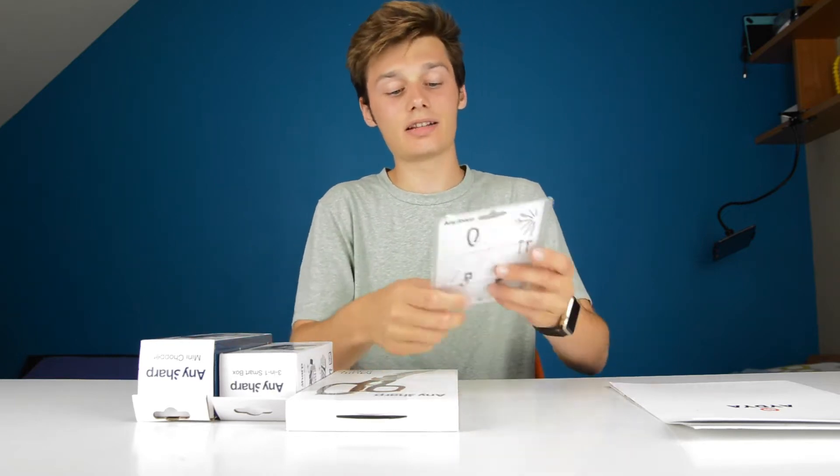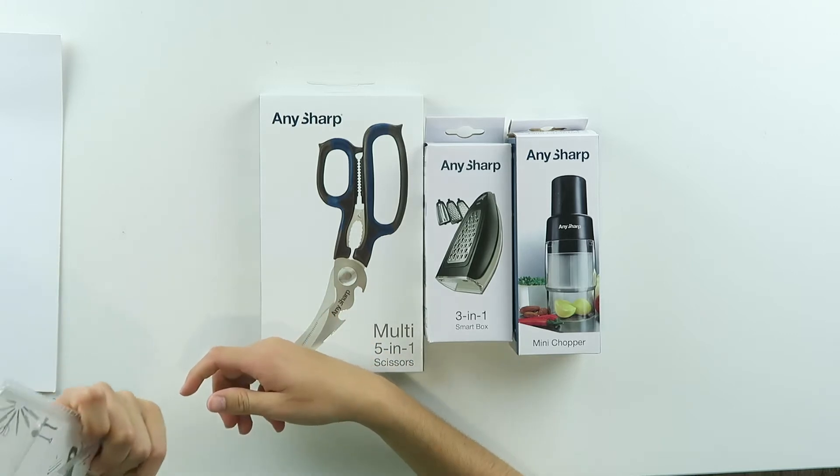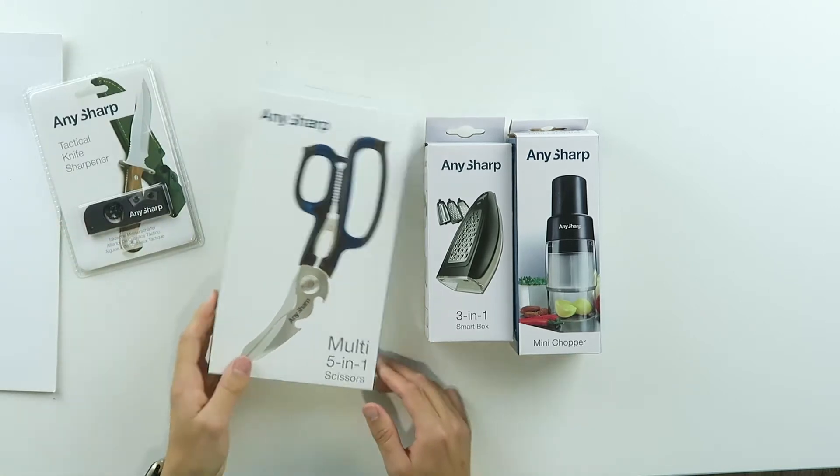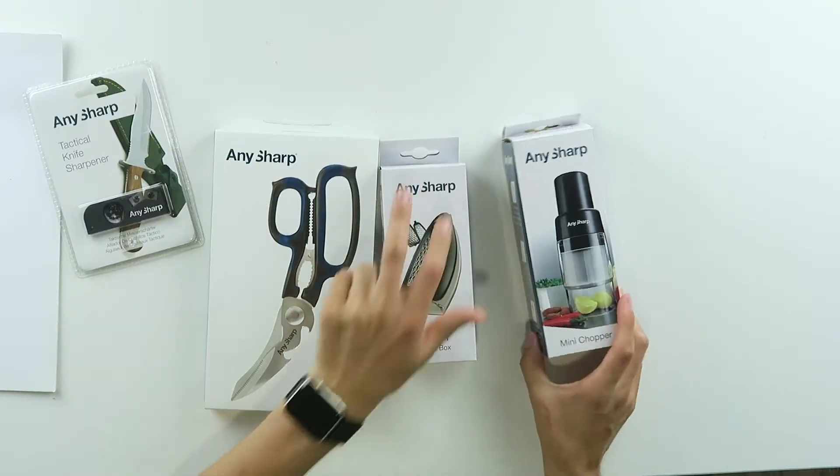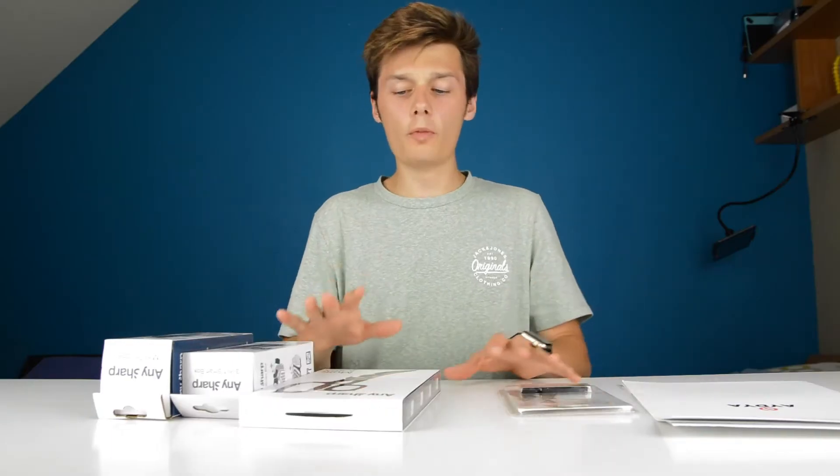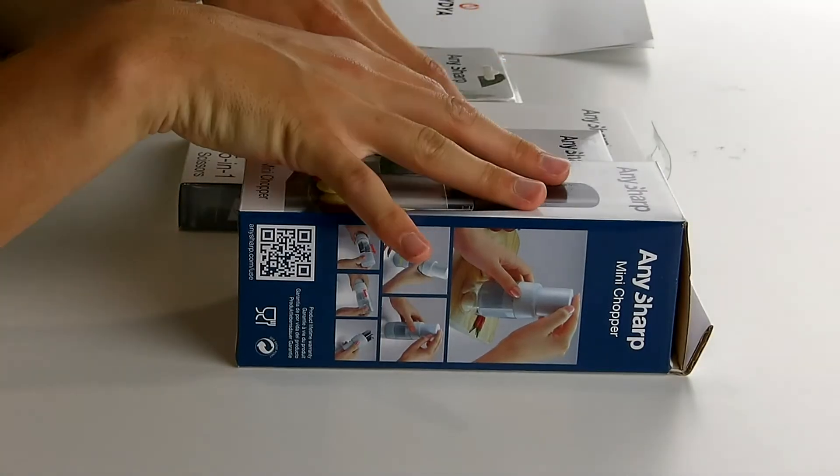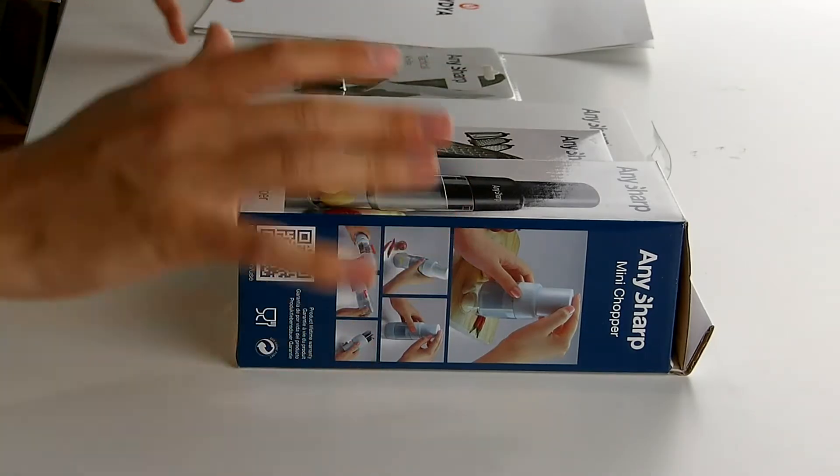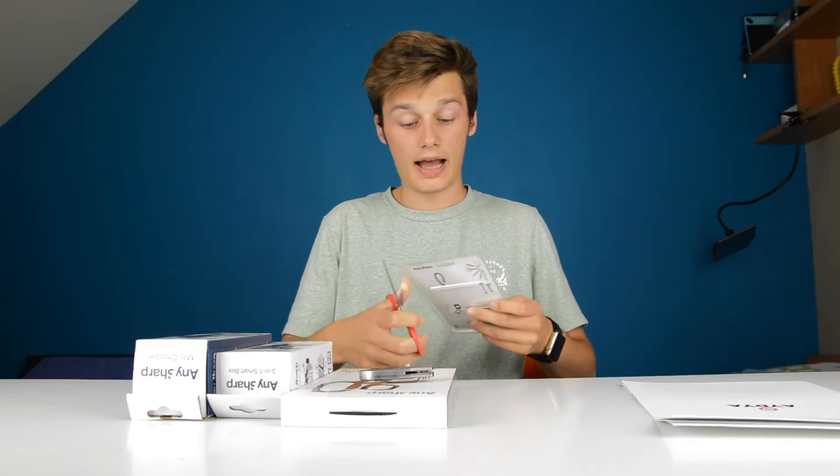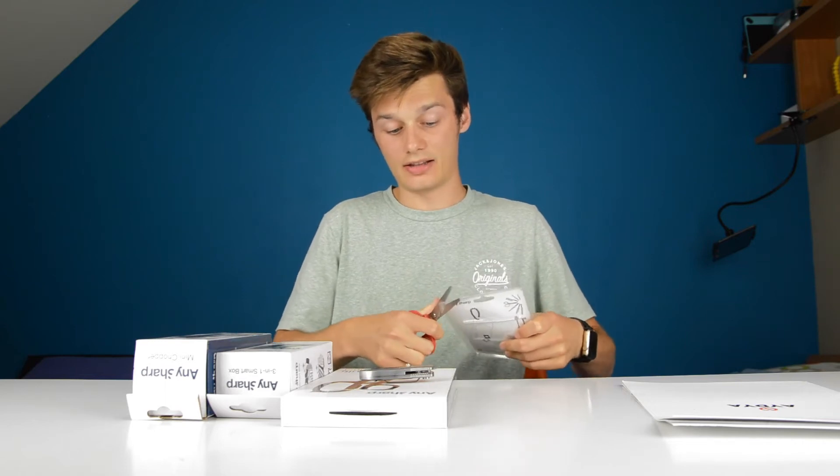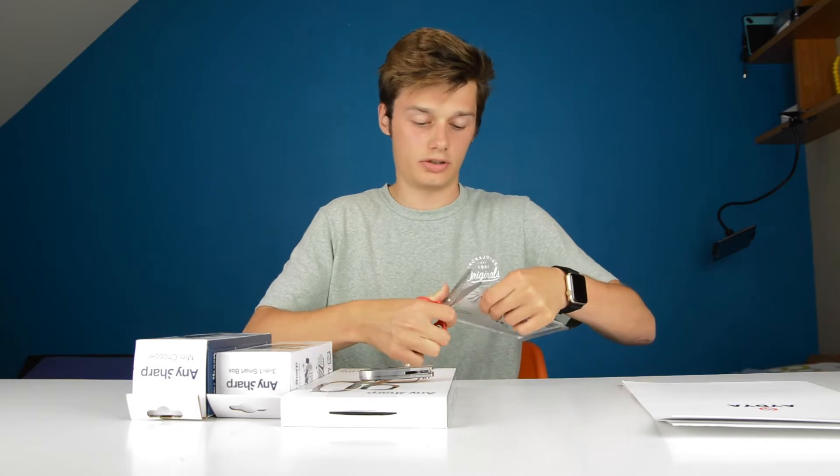This is the tactical knife sharpener, something different, tactical for outdoors probably. Then we have the multi 5-in-1 scissors, the 3-in-1 smart box, and the mini chopper. I'm going to open these but test them in the good environment. First things first, that's the tactical knife sharpener, a tactical one.